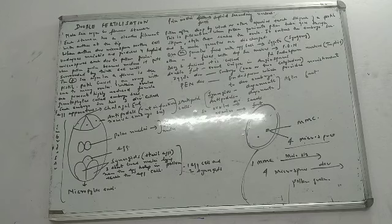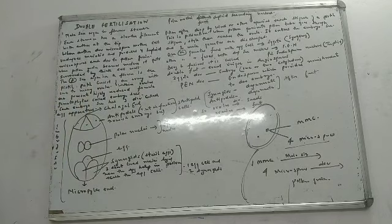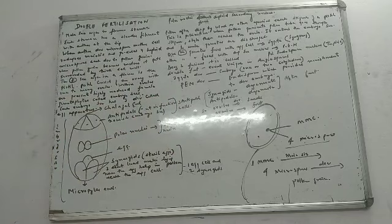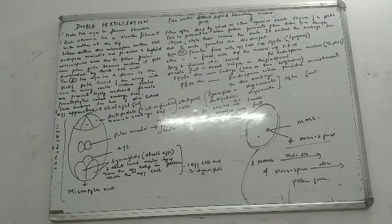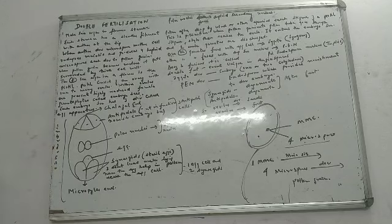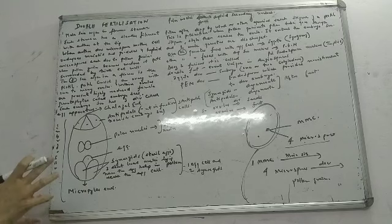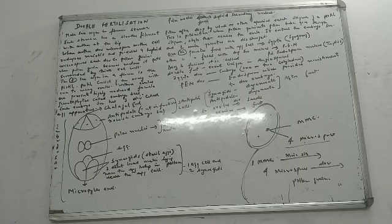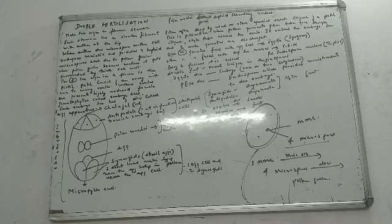Now let's move on to the female sex organ. The female sex organ in the flower is the pistil. The pistil consists of an ovary, and the ovary may have one ovule or many ovules. Within the ovules are present highly reduced female gametophytes which are known as embryo sacs.